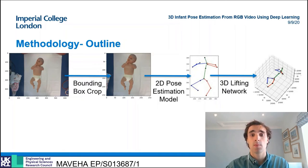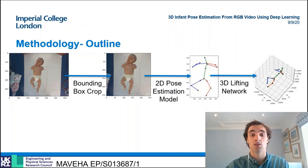These form the pipeline shown in the diagram. The input RGB image is firstly cropped according to the output bounding box. The joint locations on the cropped image are then estimated by the 2D pose estimation model. These 2D coordinates are then given to the 3D lifting network to estimate the final 3D pose.